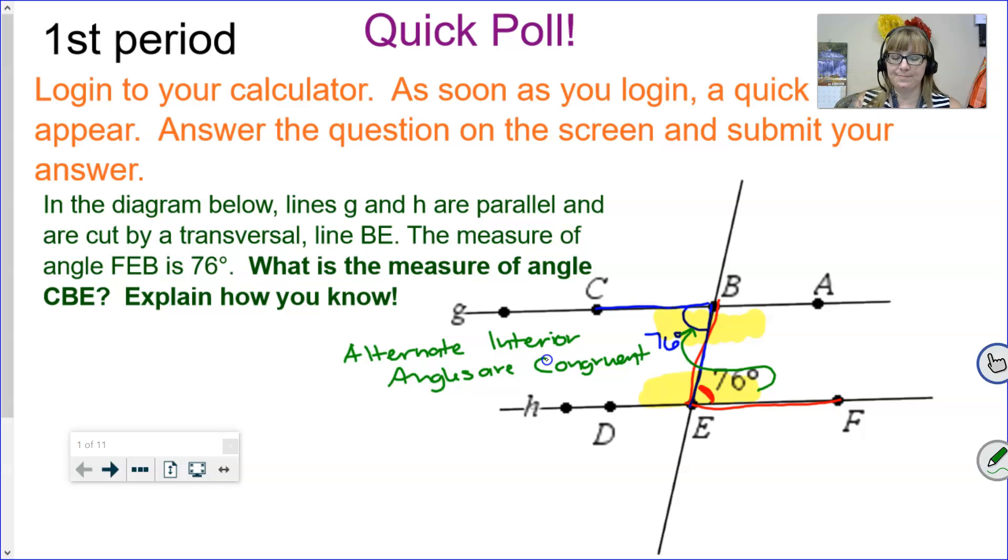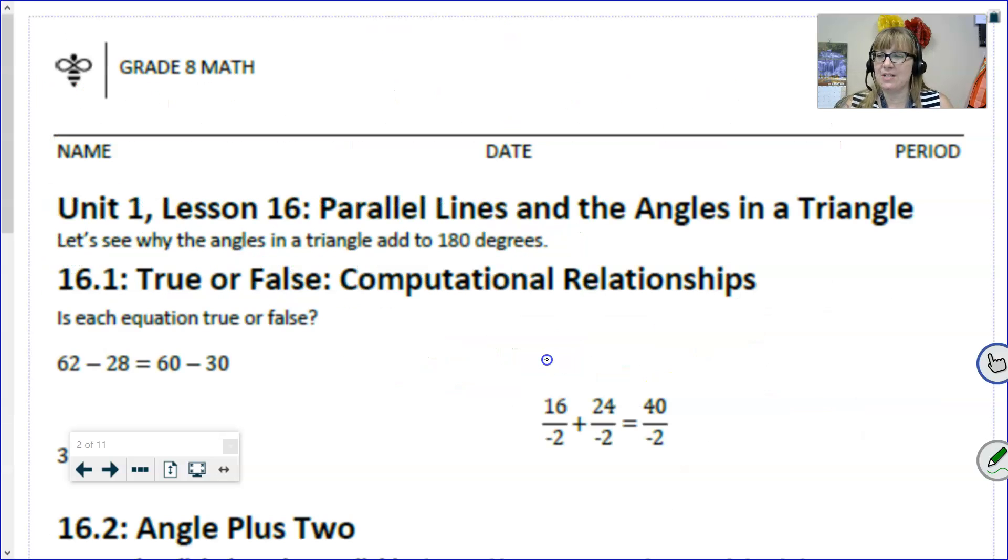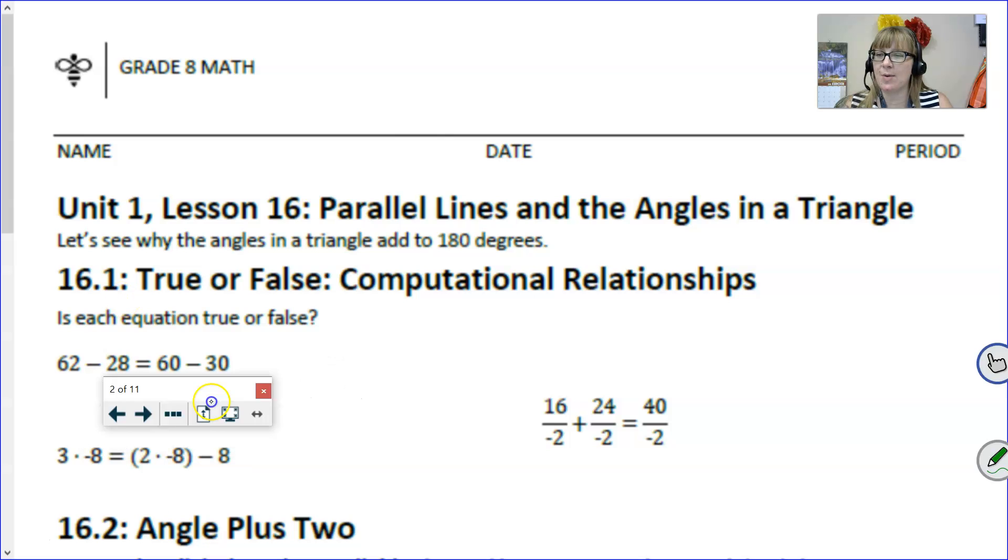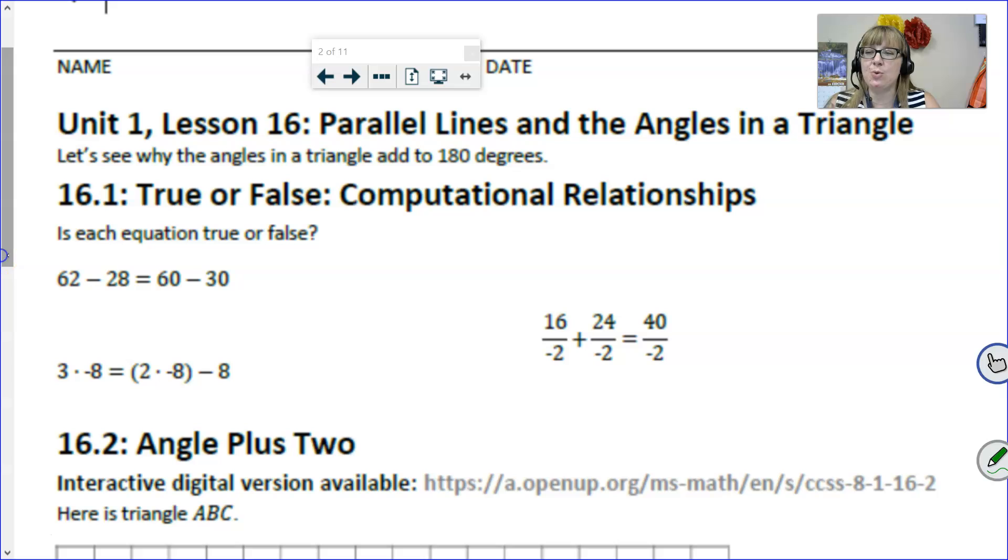We're ready to dive into the lesson. Before we start talking about those parallel lines, we have a quick secondary warm-up: True or False Computational Relationships. It's asking is each equation true. You might be tempted to calculate, to physically type into your calculator or mentally compute what each piece of these equations are. I don't want you to do that. We're looking at Math Practice 7, the structure of mathematics here. Pause the video until you've answered each question, figuring out if they're true or false, and then we'll continue.